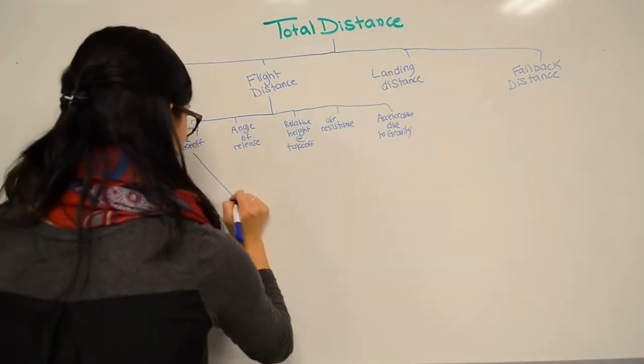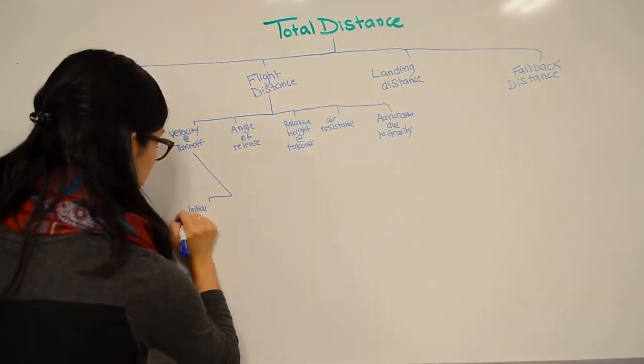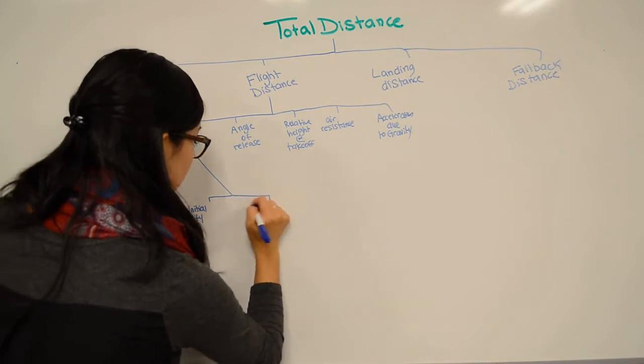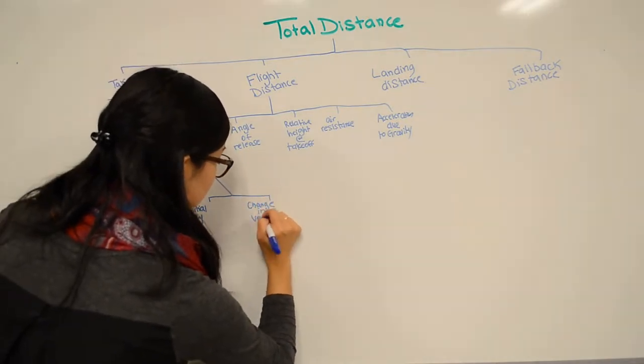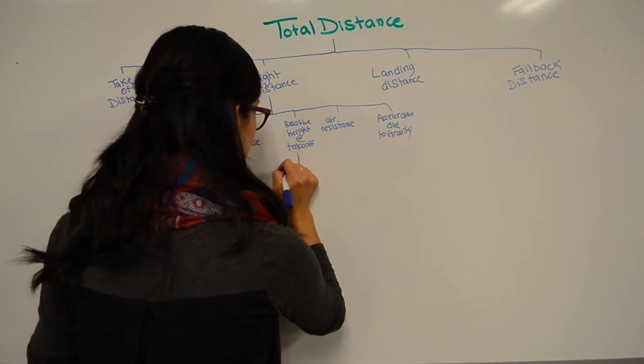We also know that velocity at takeoff can be broken down into initial velocity and change in velocity, and relative height at landing can be broken down into height at takeoff and height at landing.